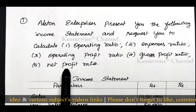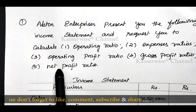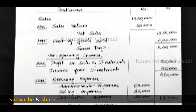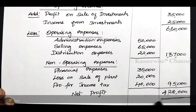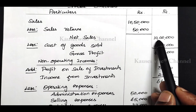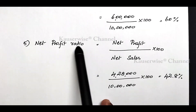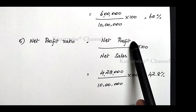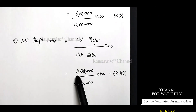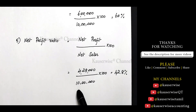The last one is net profit ratio. The formula is net profit divided by net sales into 100. Net profit from the income statement is 4 lakh 28,000 divided by net sales 10 lakhs into 100. Net profit ratio equals 4 lakh 28,000 divided by 10 lakhs into 100.